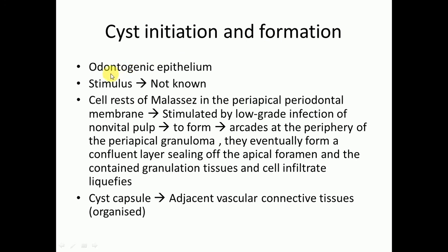Cysts are formed from the odontogenic epithelium. The stimulus is not known yet. Some theories say that the cell rests of Malassez in the periapical periodontal membrane are stimulated by a low-grade infection of the non-vital pulp, and they form arcades at the periphery of the periapical granuloma. They eventually form a confluent layer seeding the apical foramen, and the granulation tissue and cell infiltrate liquefies. The capsule is formed by the organization of the adjacent vascular connective tissue.